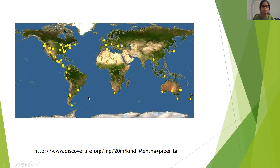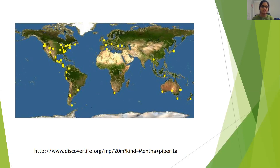Mentha piperita grows really well in soil which is rich in nutrients and also moist. When growing the plant, changing the location every consecutive year would help it grow better than staying in the same place for a long time, as remaining in the same location leads to weak community roots.